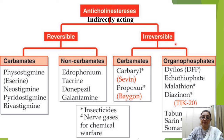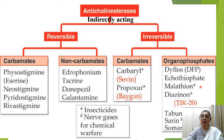The irreversible group includes a carbamate subgroup — carbaryl and propoxur (used for killing cockroaches) — and organophosphate compounds used in farming: diisopropyl fluorophosphate, ecothiophate, malathion, and diazinon (used as rat poison). Nerve agents such as tabun and sarin are also organophosphates used as chemical warfare agents.